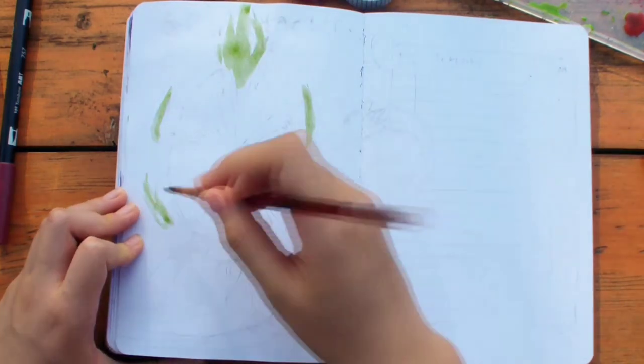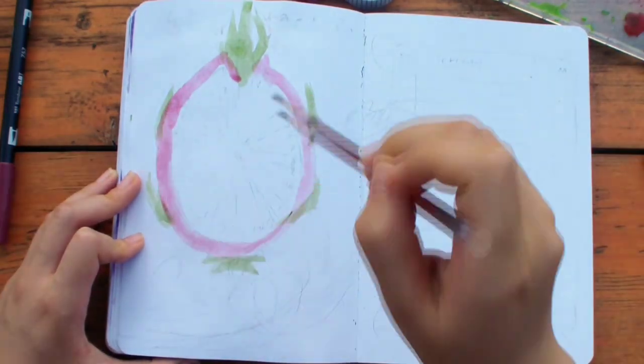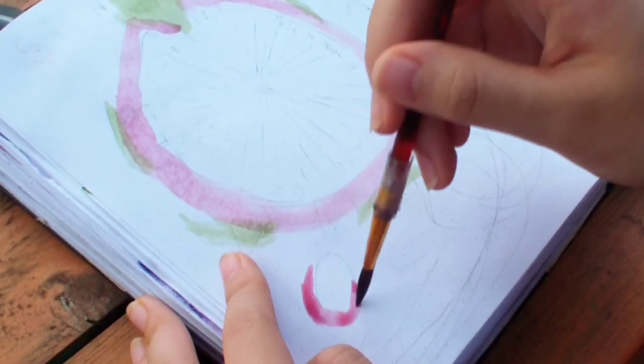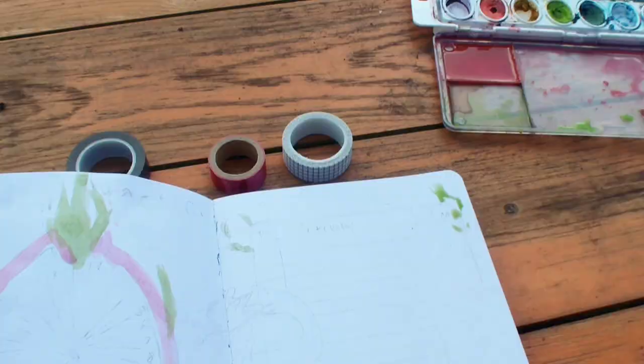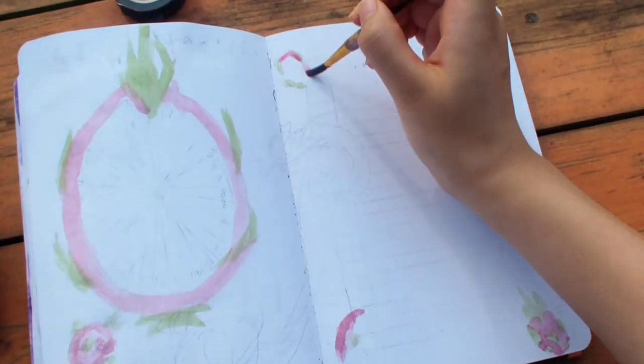This first page is the sleep tracker page. For this, I'm going to draw a giant dragon fruit cut in half. In the inside of the dragon fruit will be where I actually track my sleep, but on the outside it's going to have a dragon fruit design. I also drew some mini dragon fruits floating around the page.